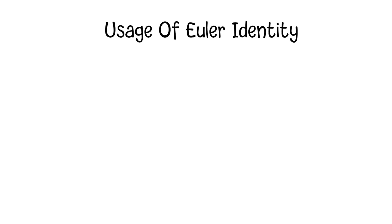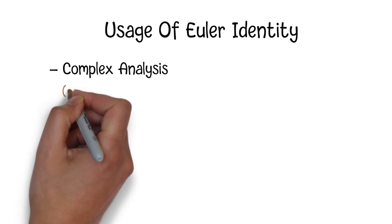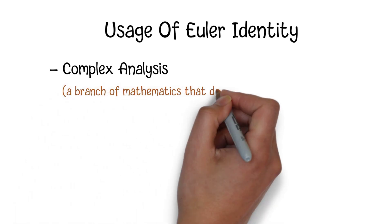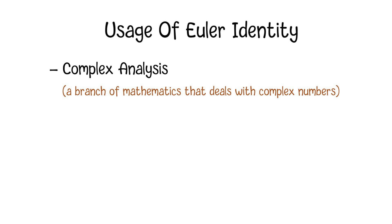The Euler identity is a fundamental tool in complex analysis. Complex analysis is a branch of mathematics that deals with complex numbers. It simplifies and enriches the study of functions, series, and integrals involving complex variables.